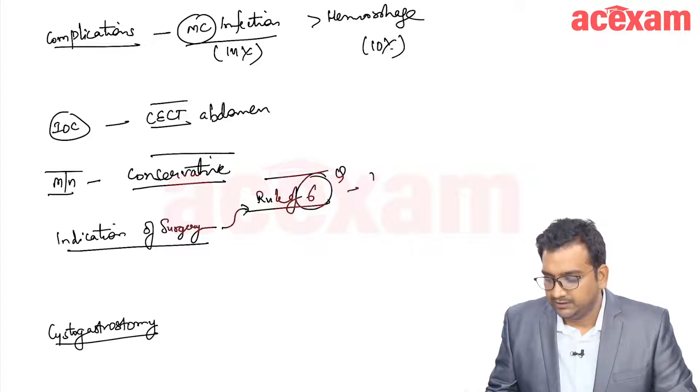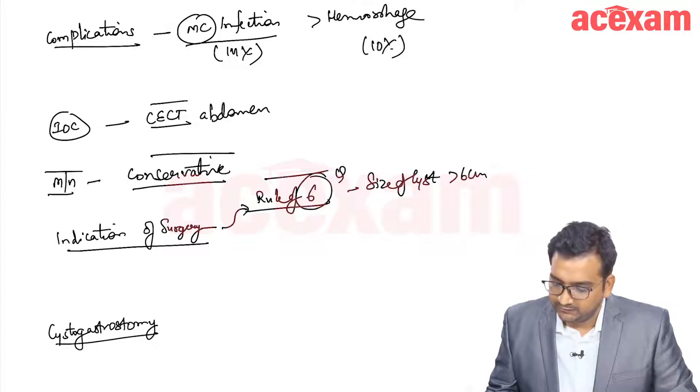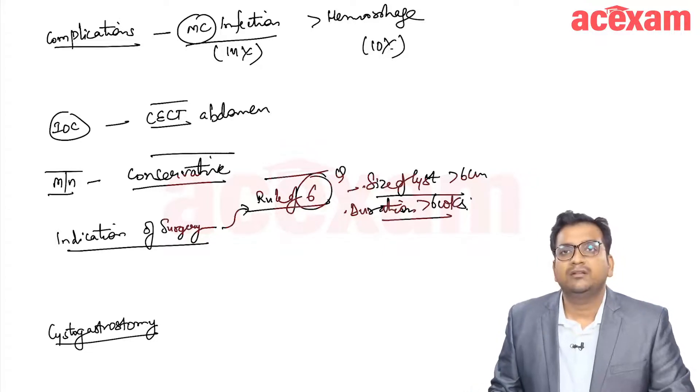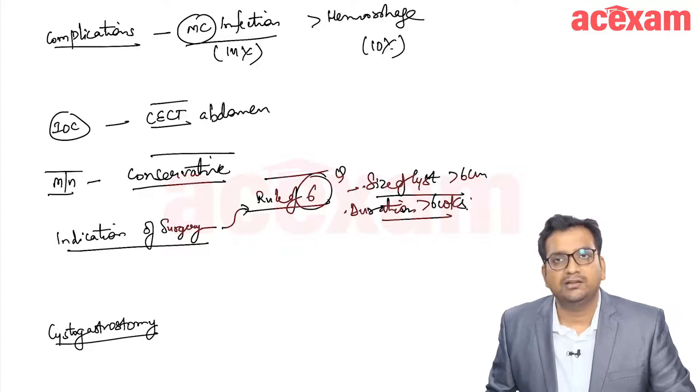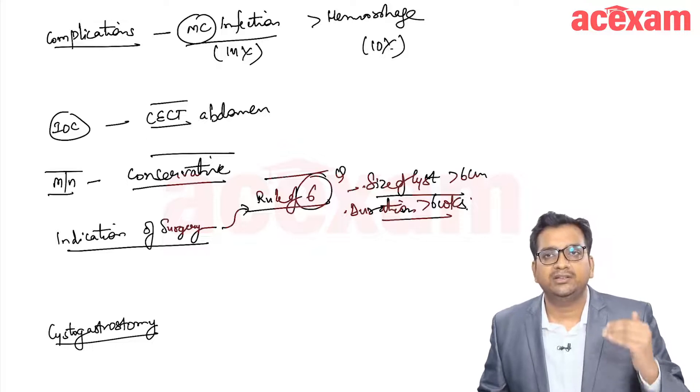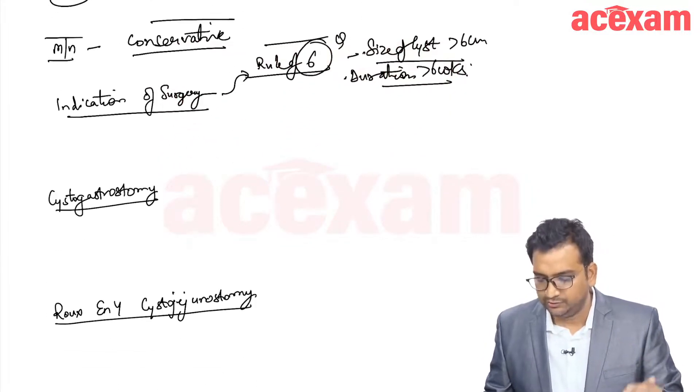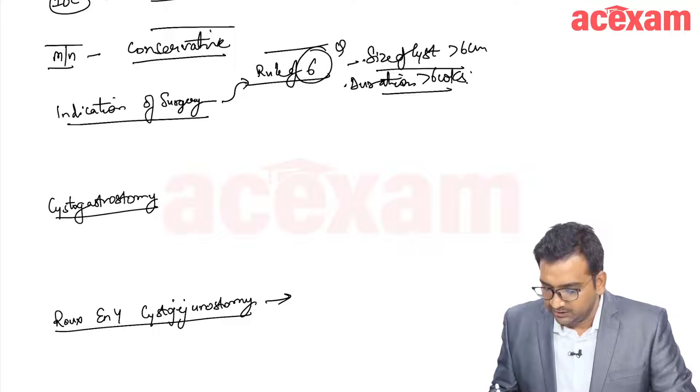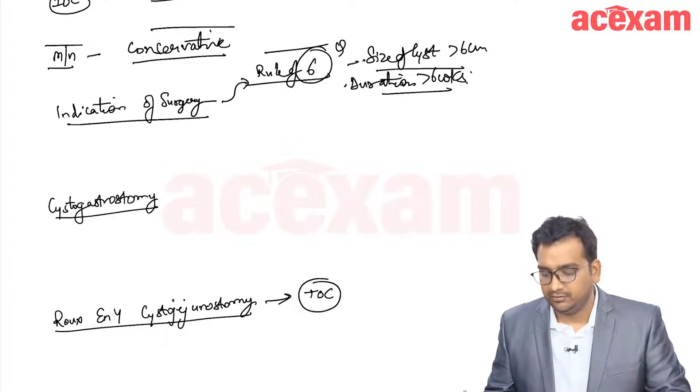If the size of cyst is more than 6 cm, if the duration is more than 6 weeks, then we can go ahead with surgery. If the patient is symptomatic, then we can go ahead with surgery. Most commonly performed surgeries are cystogastrostomy and cystojejunostomy. Cystogastrostomy here is the treatment of choice.